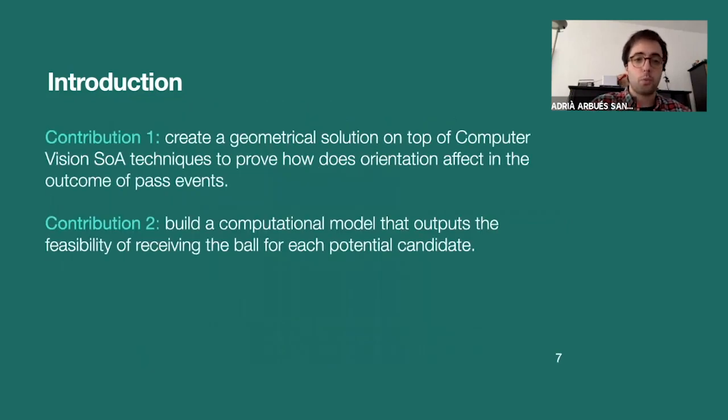we contribute in two ways. The first one is create some kind of geometrical solution on top of existing computer vision state-of-the-art techniques that indicates somehow the fit of orientation between a passer and potential receivers. And then we also contribute by building some computational model that outputs one feasibility measure for every single receiving potential that we have in the field.